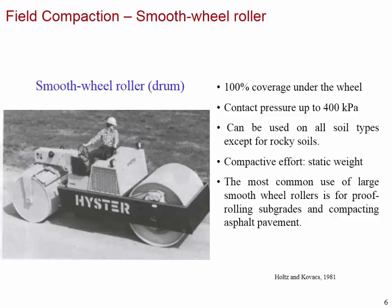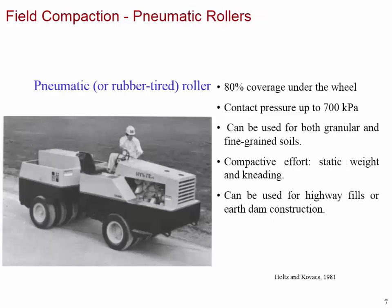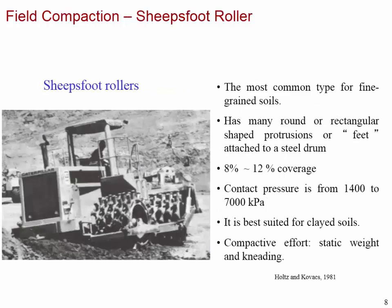Let's go over field compaction equipment. You can read more in the lecture material and textbook. The smooth wheel roller is the most common type. The pneumatic roller has rubber tires, which is why it's called that. The sheepfoot roller has protrusions on the drum that create a kneading effect on the soil surface.